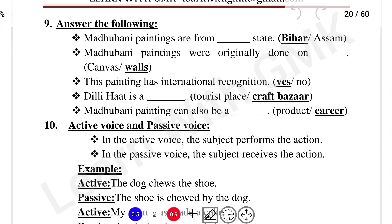Madhubani Paintings are originally done on walls and small paintings. This painting has international recognition. Dilli Haat has a Craft Bazaar. Madhubani Paintings are sold at Dilli Haat.